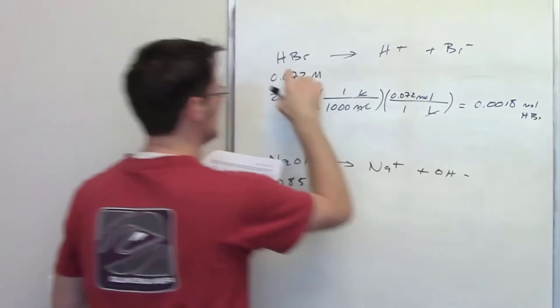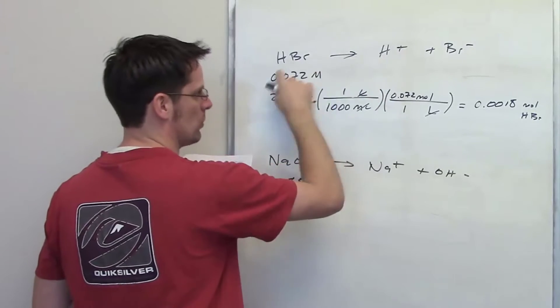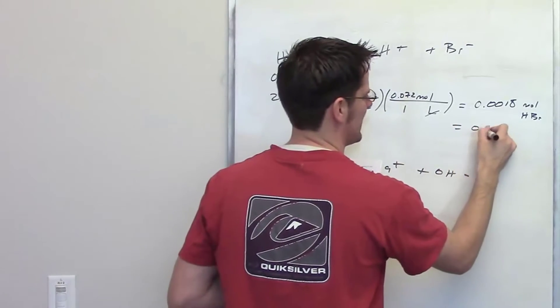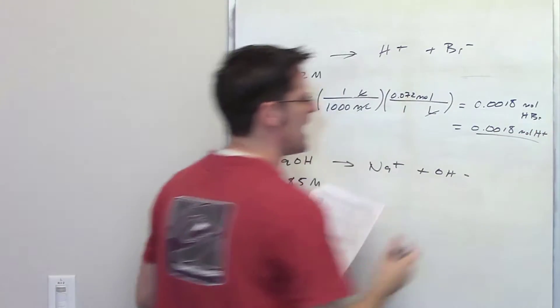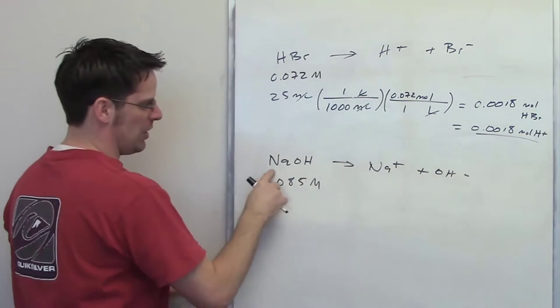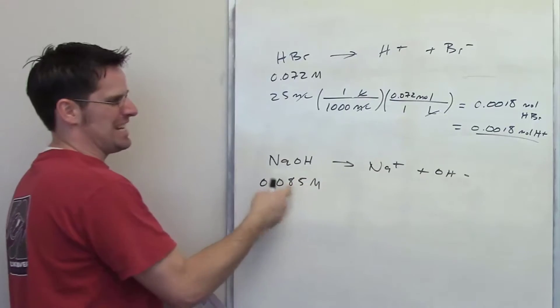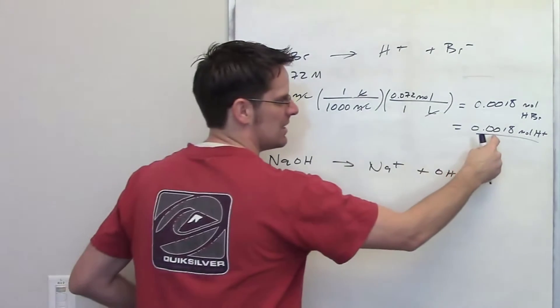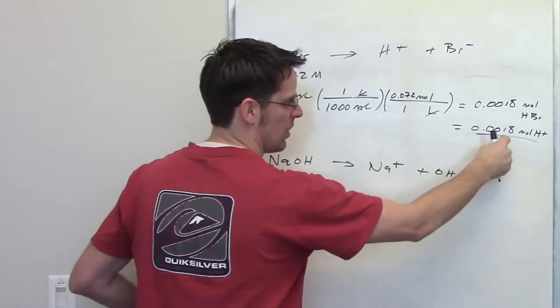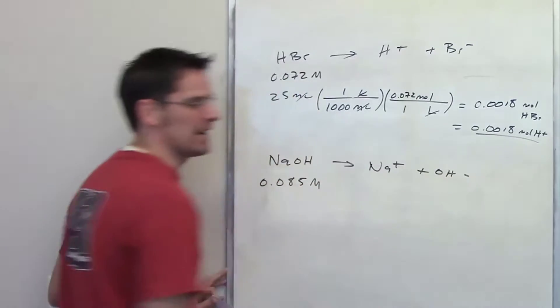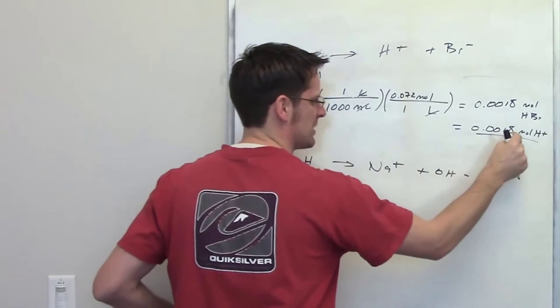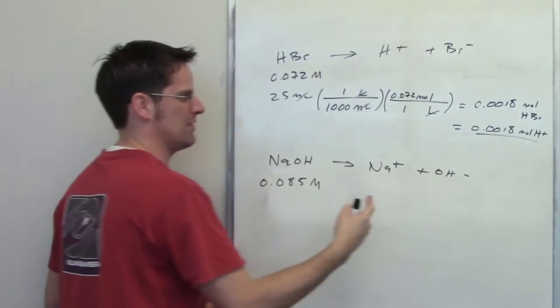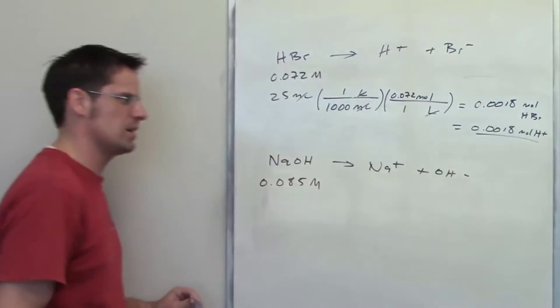Now because HBr releases H+ in a one-to-one ratio, by extension that means I'm going to get 0.0018 moles of H+. So I have to add whatever volume of sodium hydroxide at this concentration it takes in order to get 0.0018 moles of OH-. Does that make sense? Because I want to add the exact amount to perfectly cancel out this number of moles of H+. So I have to add the same number of moles of hydroxide.